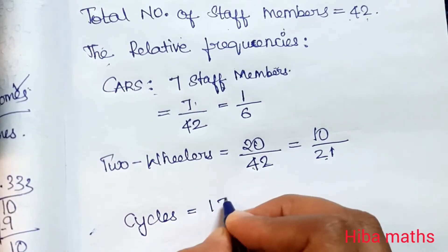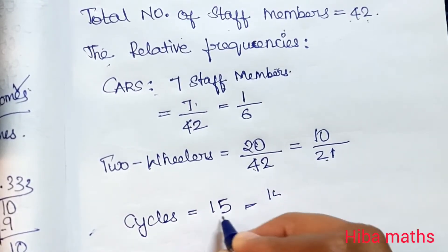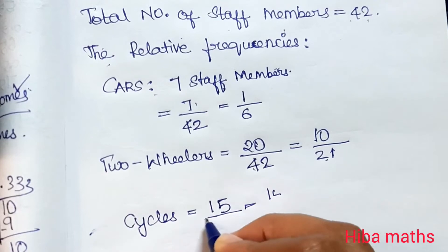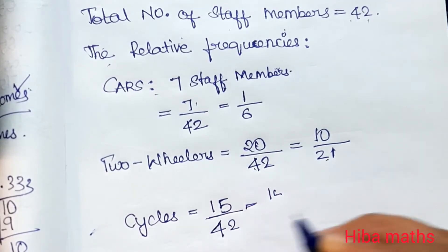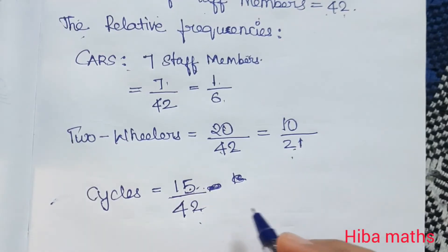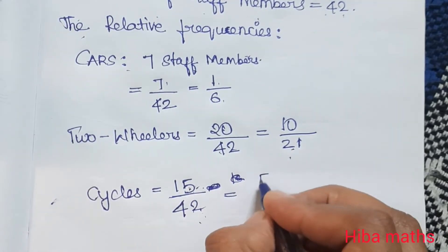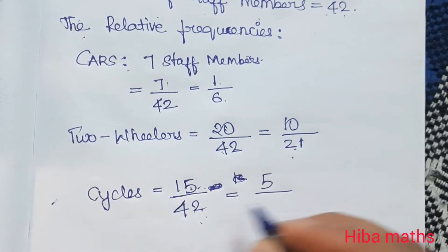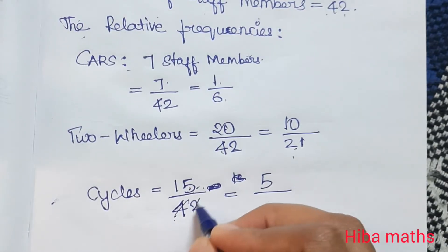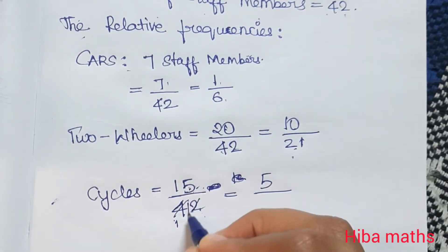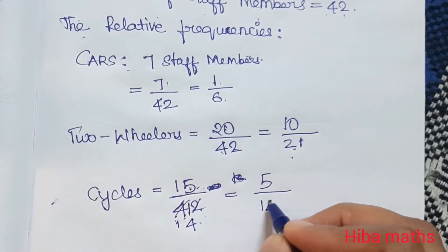Cycles: 15 staff members. So cycle is 15 divided by total 42. This is 3 tables divide — 3 fives are 15, 3 ones are 3, balance 1 — 3 fours are 12. So the result is 5 by 14.